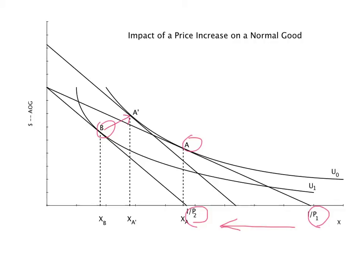It is the amount of income the consumer needs to receive, shown as CV on the vertical axis, to compensate her for the loss in utility from U naught to U1 resulting from the price increase.